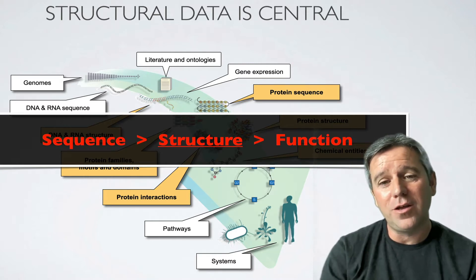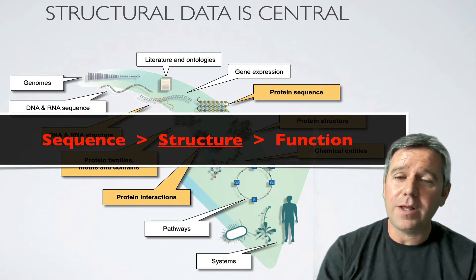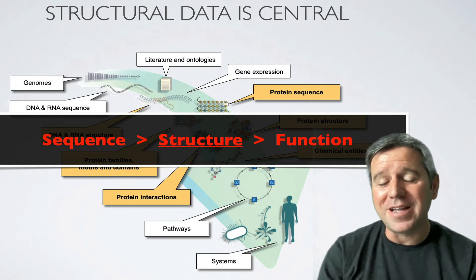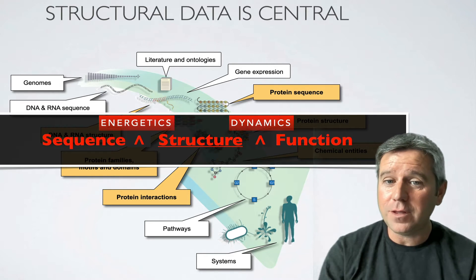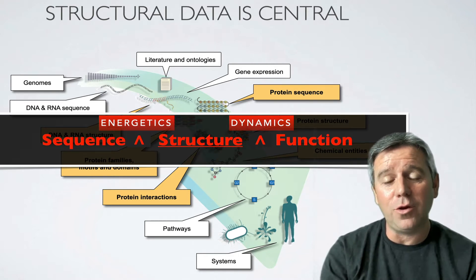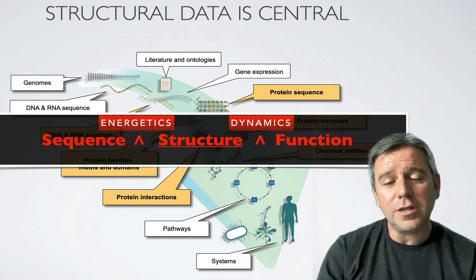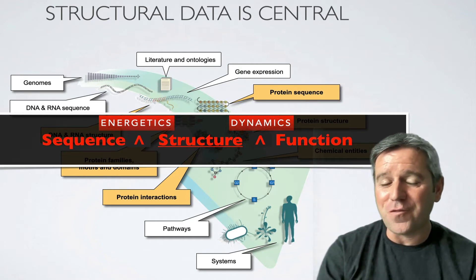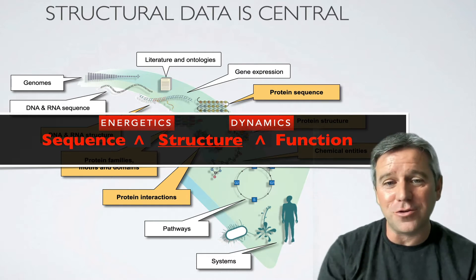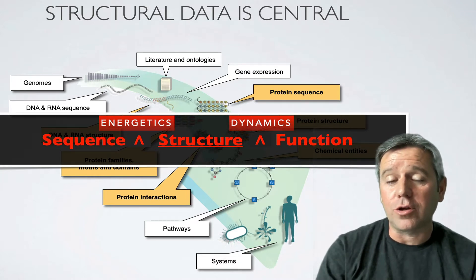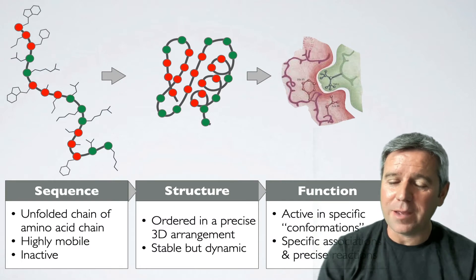Over the last decade in particular, it's become clear that there's missing information in this hierarchy. We need to know about the energetics of the sequence and all the different structures it could possibly encode, to learn what is most favourable for a given set of conditions. And that structure itself doesn't tell us everything about function — we often need to know about the dynamics: how these molecules move, change shape, and are regulated through changes in structure, leading to function and functional control.